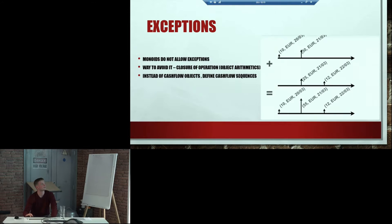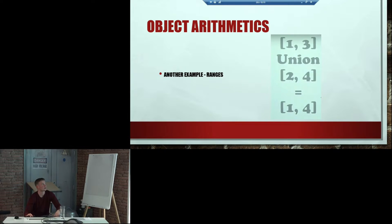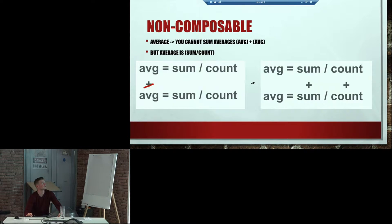In order to avoid that, we can represent data differently — as cash flow sequences instead of cash flow objects. They can then be combined by equivalent dates. This is the thing called object arithmetic — it's about redesigning data in order to make it exception-free, a little bit more declarative. There are quite a lot of other examples of object arithmetic, like ranges: you combine 1, 3, 2, and 4 and you get the range which encompasses them all. And averages — you cannot combine averages straight away, but you can combine two sums and two counts to get a new average.